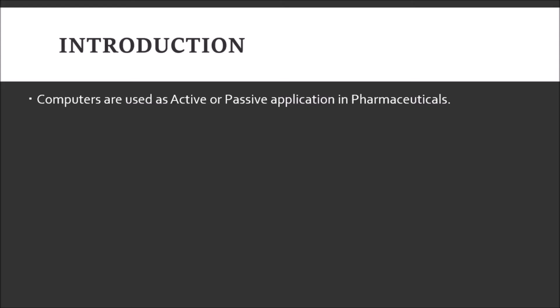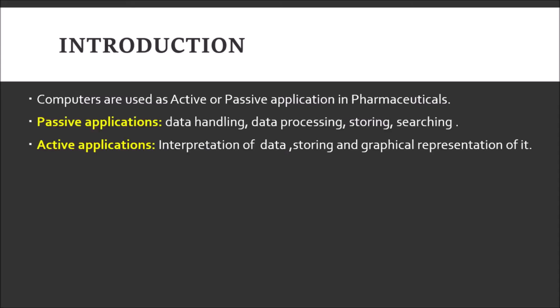In pharmaceuticals, there are many types of applications — some are active and some are passive. Passive applications include data handling, data processing, storing, and searching. Active applications include interpretation of data, storing, and graphical representation of data.